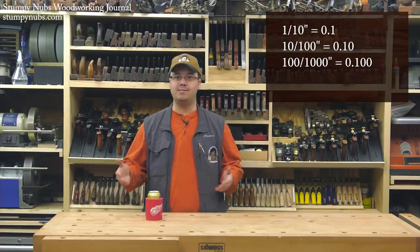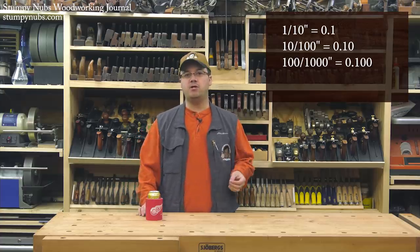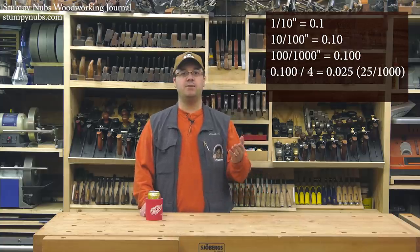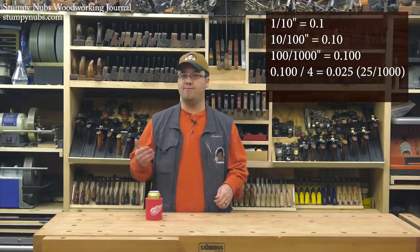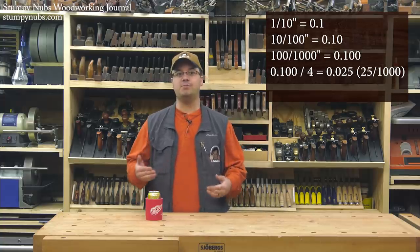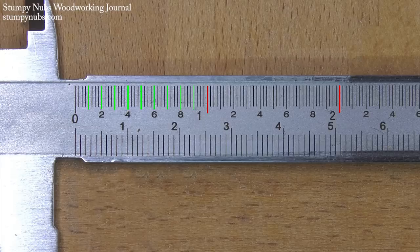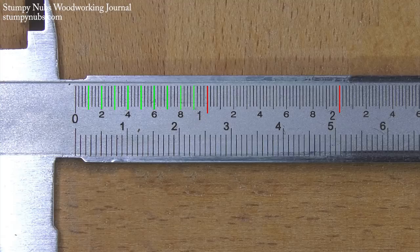Now why would you want to add zeros like that? Because it's difficult to divide point one by four, but point one oh oh is easily divided by four to get point oh two five or twenty-five thousandths of an inch. Now let's apply that to the scale on our caliper. The inches are divided into ten smaller increments. Point one, point two, point three, and so on up to one point oh and then on.